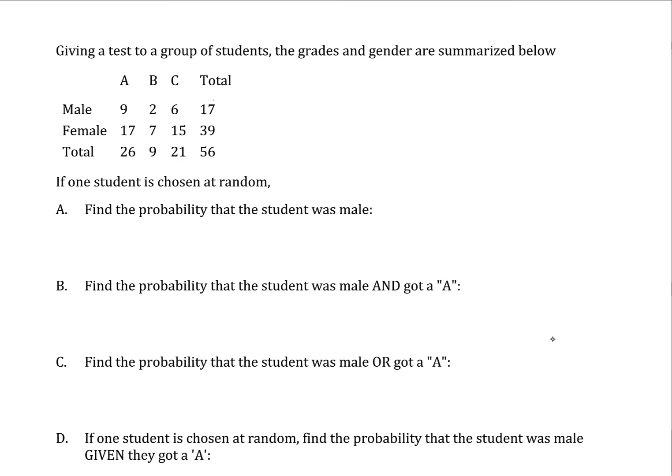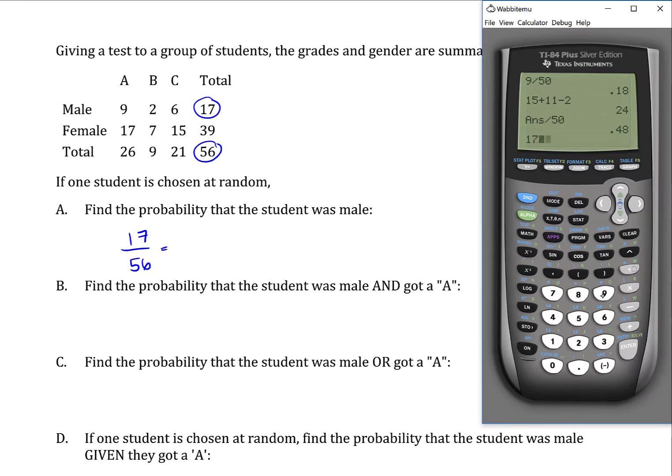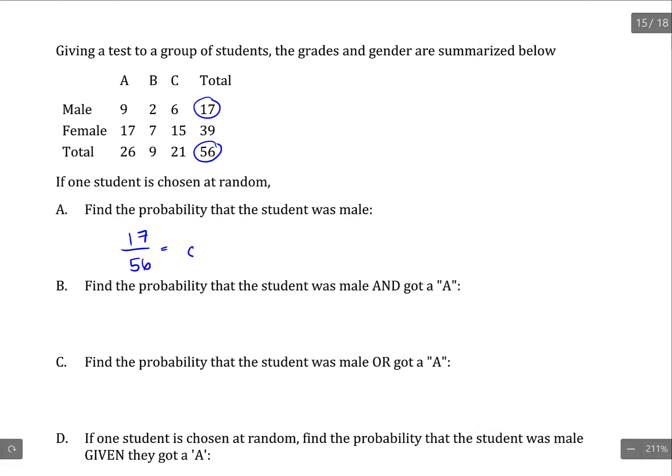Out of this group there are 17 male students out of 56 total. So 17 over 56 will give us the probability of 0.304.